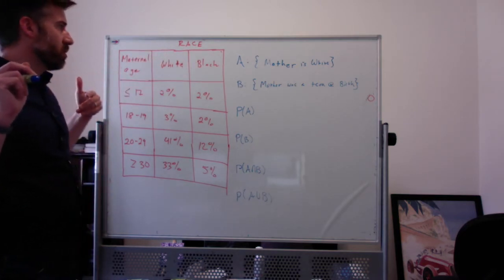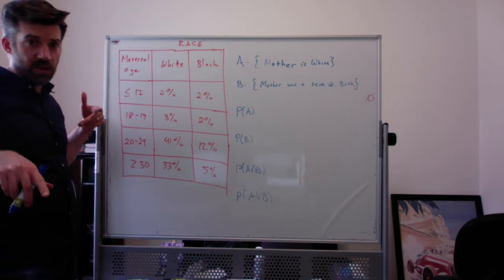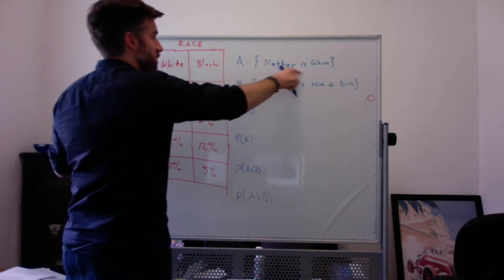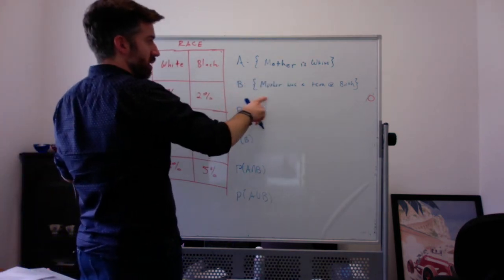And so they defined a couple events. A is the event that the mother is white. B is the event that the mother was a teen at birth.